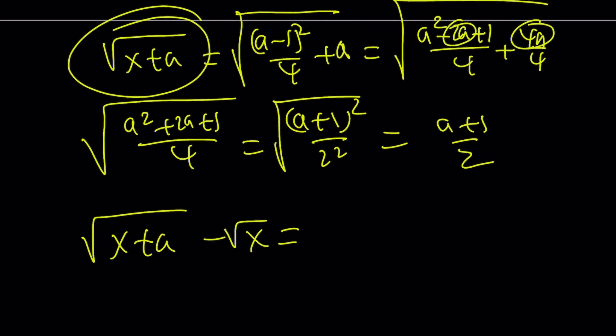And that is equal to a plus 1 over 2 minus a minus 1 over 2. And as before, it is equal to 1. Why? Because you make a common denominator. It cancels out. And you end up with 1. Same as before.